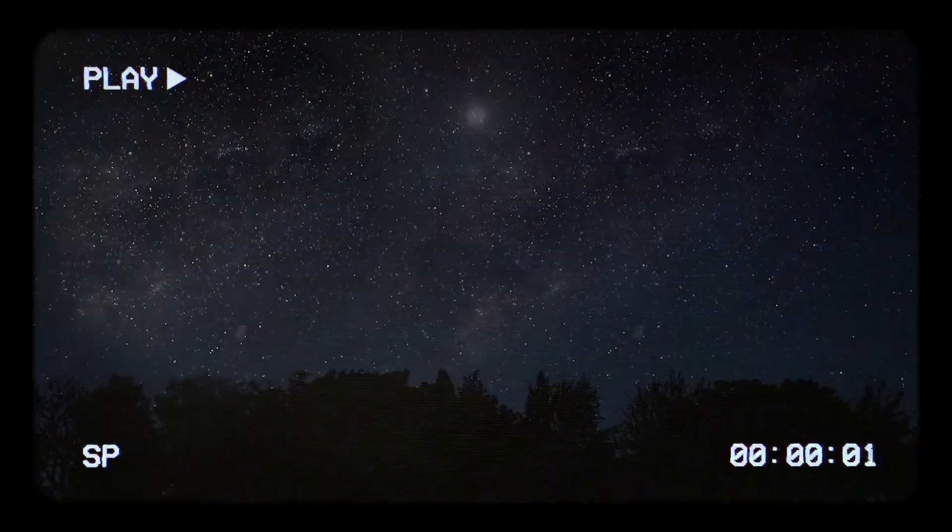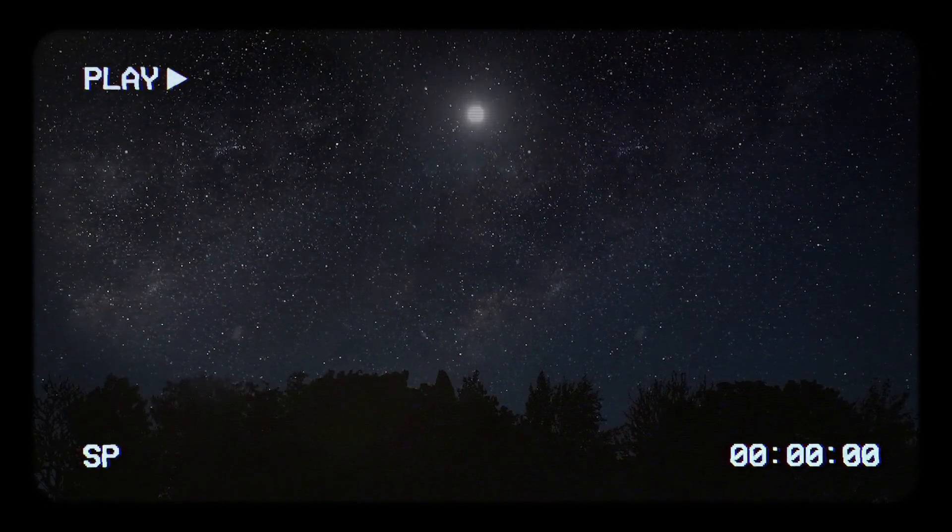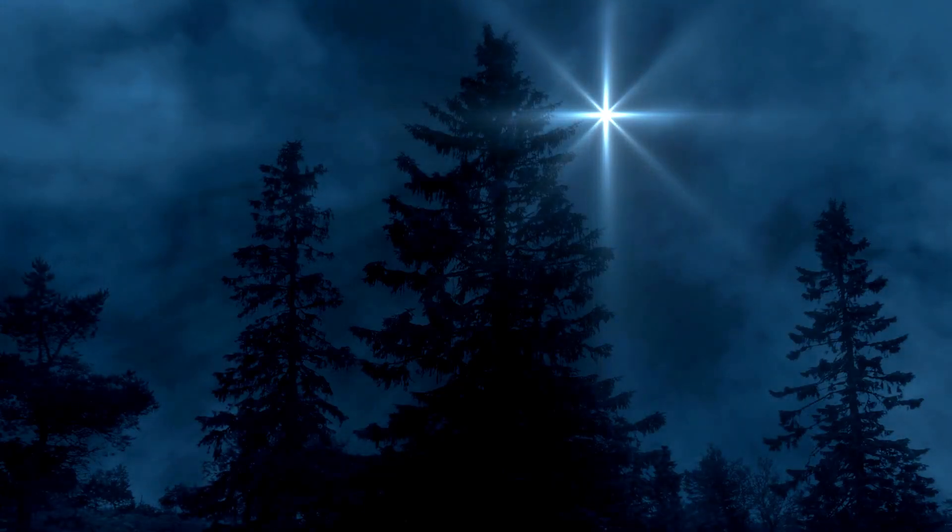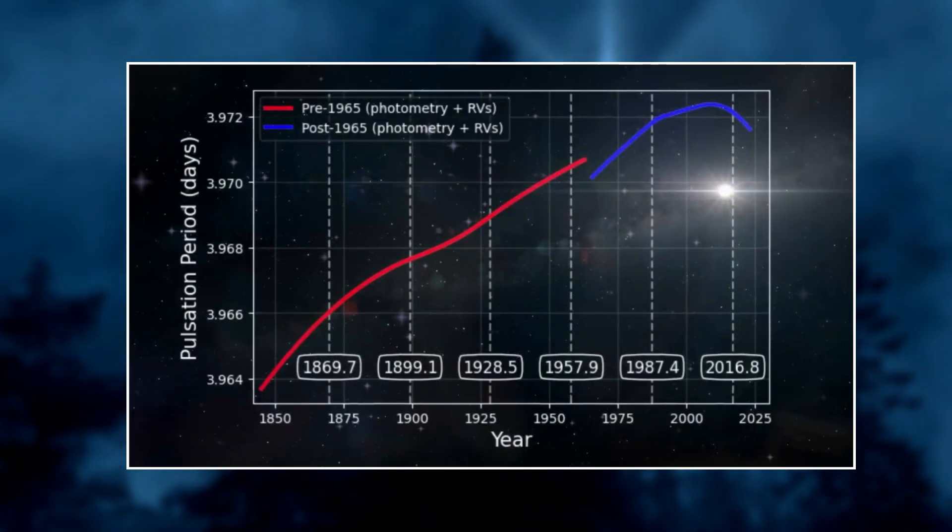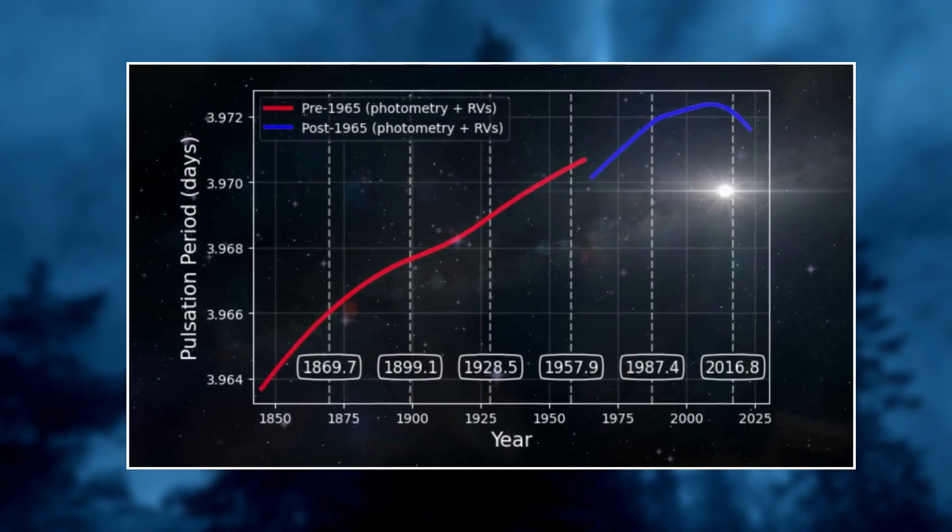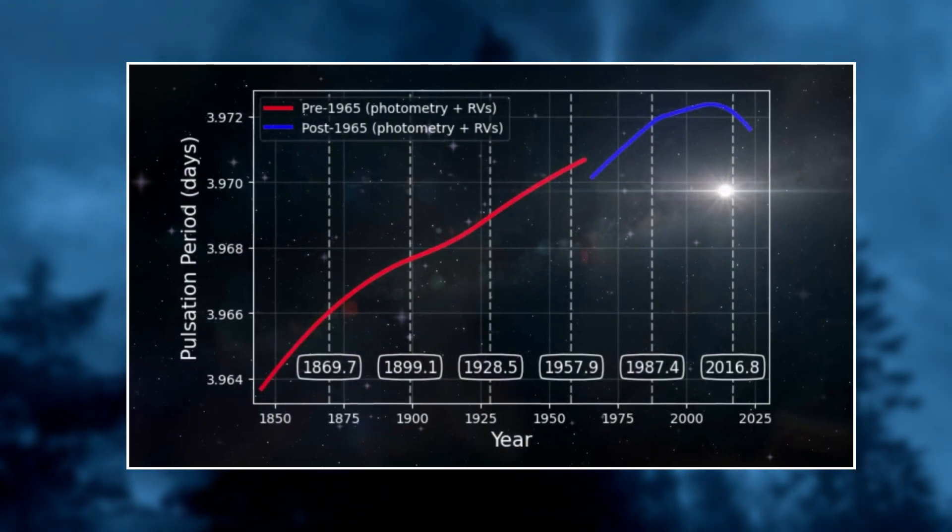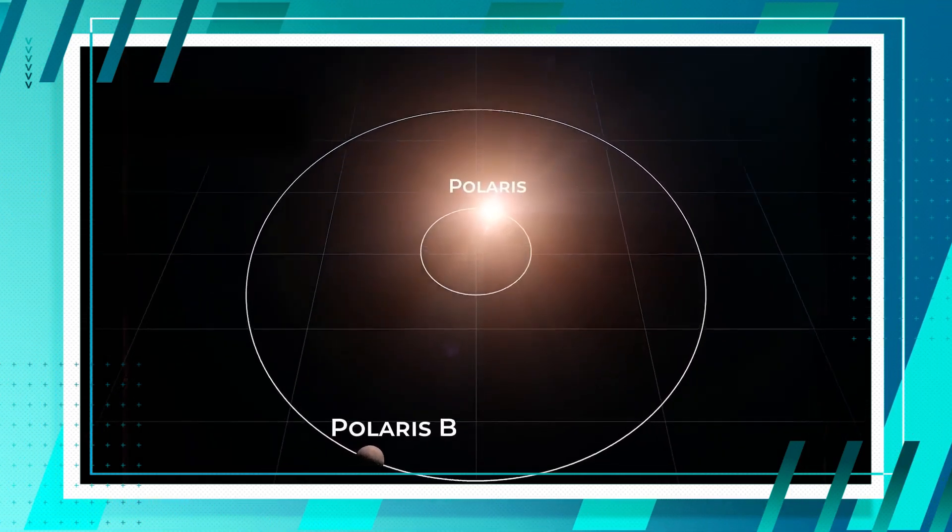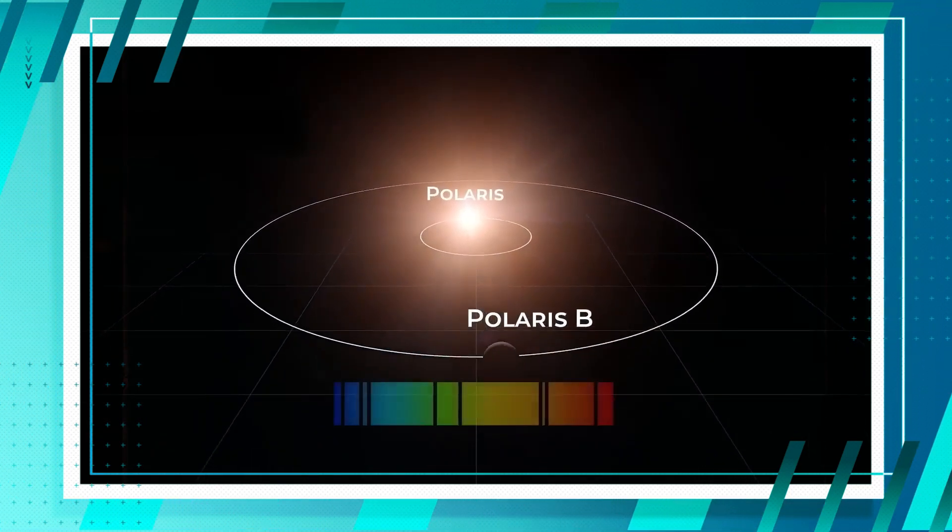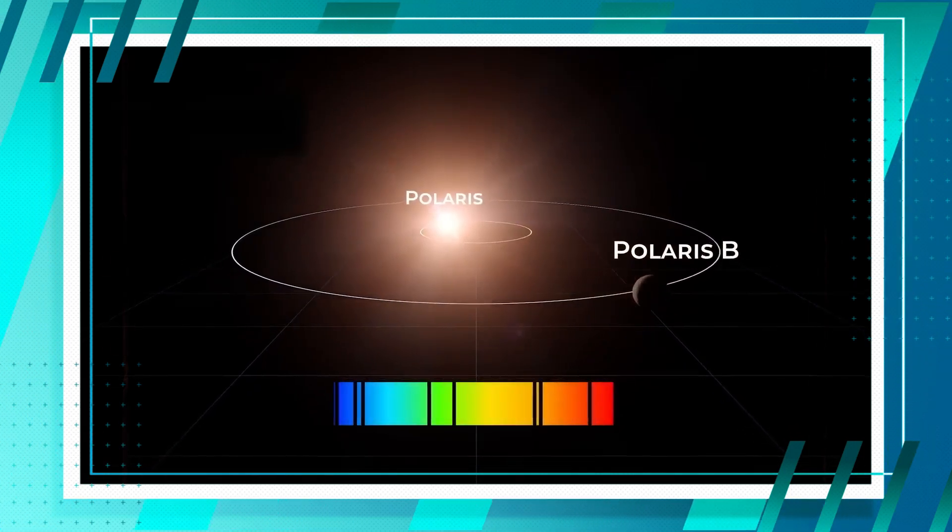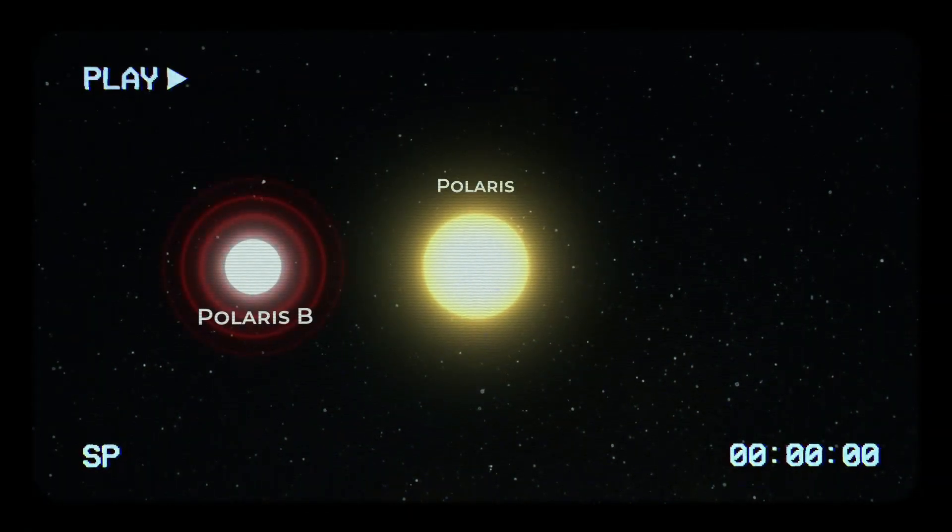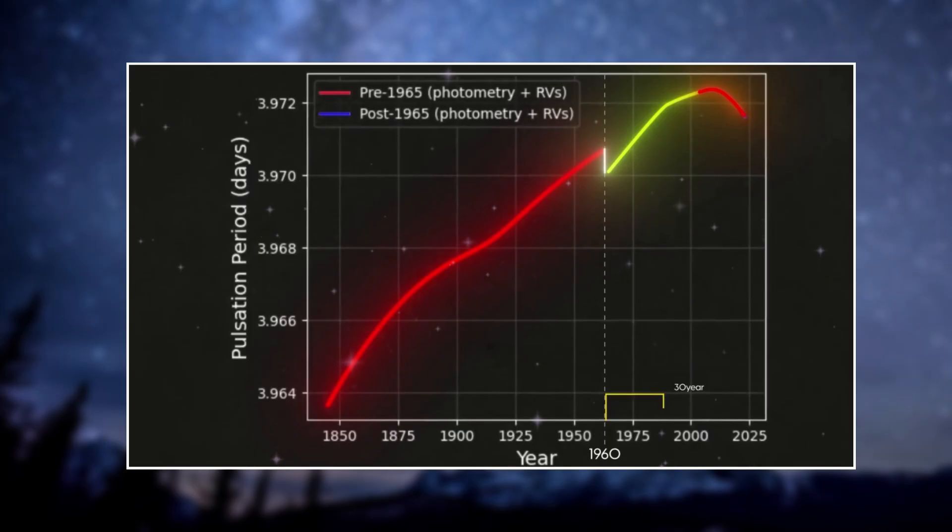After some calculations, astronomers discovered that the pole star's pulsation period is rising by 4.5 seconds every year. But the question now is, what could be the cause of this? When astronomers examined this graph more attentively, they discovered that the change in their graph is primarily fluctuating slightly every 29.4 years, or nearly 30 years. Remember how I said Polaris B completes a cycle every 30 years? Because of this, scientists came to the obvious conclusion that when Polaris B passes close to the pole star, its gravity may alter the atmosphere of the pole star. And, potentially as a result of this influence, the pulsation period of the pole star is rising year after year.